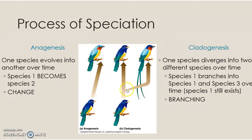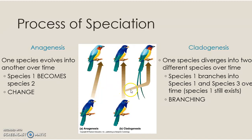Cladogenesis involves branching. The way I remember cladogenesis is when you make a cladogram you're drawing these branches — well, cladogenesis requires branching. With cladogenesis, the same original species, as time passes, continues to exist. But another species happens over here through evolution, selection, maybe fitting into a new niche. This new species evolved out of the original species, but the original species still exists. Branching is cladogenesis.